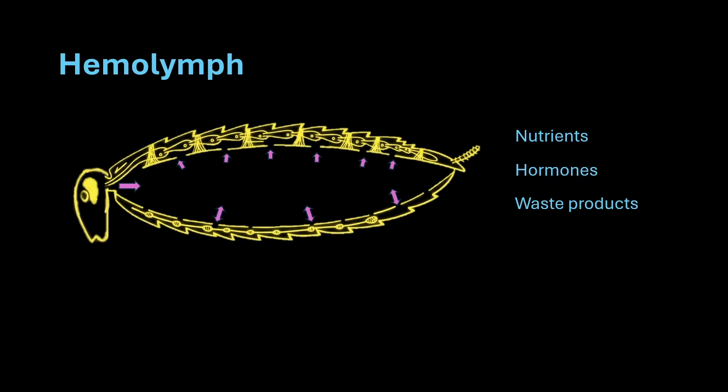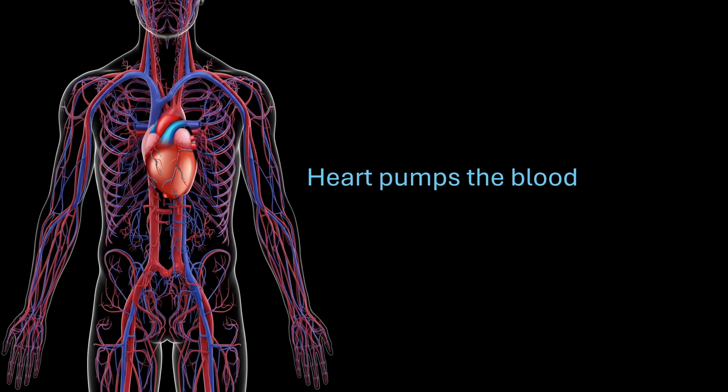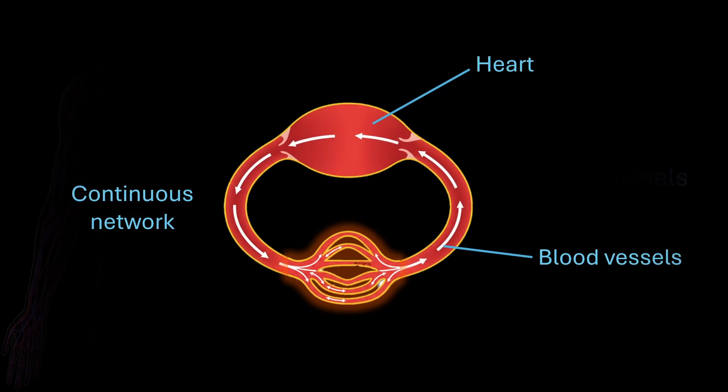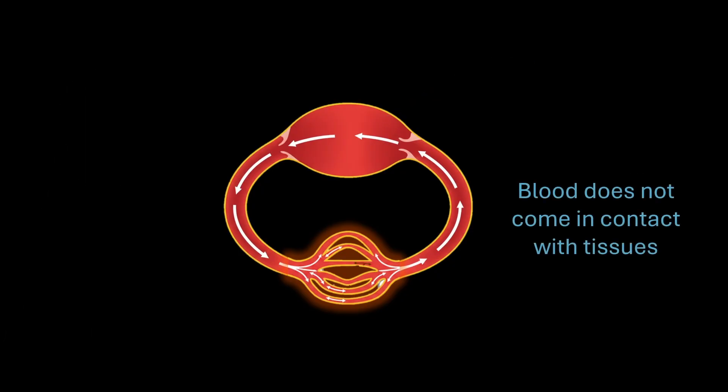So let's now see how the blood is circulated in cockroach's body. In humans, we know that the heart pumps the blood and this blood flows within the network of tubes or the blood vessels at all times and never leaves them.